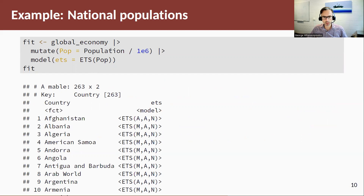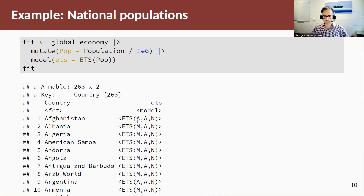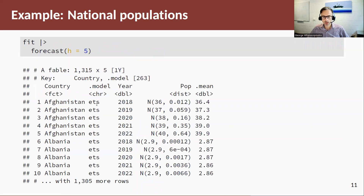Let's look at an example. Using the global economy dataset, we forecast the population variable for each country. We pass the data into the model function choosing ETS, using population divided by millions to bring it to a reasonable scale. We get back a mable object with one row and one estimated model per country. The chosen models are combinations of error type, trend, and no seasonal component given the annual data — sometimes the algorithm chooses additive errors, sometimes multiplicative. We can pipe the mable into the forecast function to get distributional forecasts.